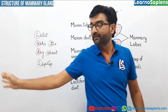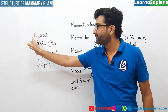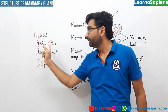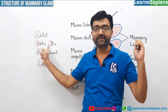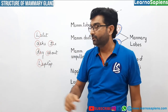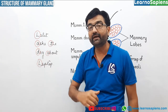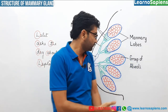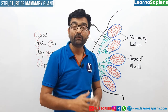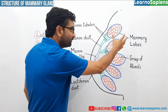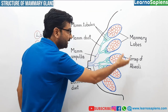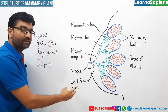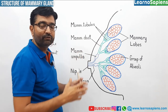Lalit — lobes. Yhe memory lobes hai. Memory lobes kahan khulti hai — alveoli mein. Alveoli — tubules mein. Tally kar lijiye aap. Tubule — duct mein. Duct — ampulla mein. Lactiferous duct and then outside through the nipple. So: Lalit → ask → the → dog → about → laptop = Lobes → Alveoli → Tubules → Duct → Ampulla → Lactiferous duct. I hope you enjoyed the story.